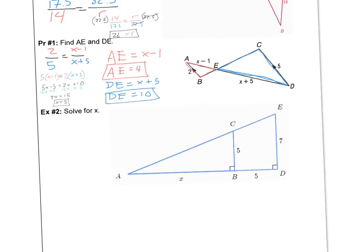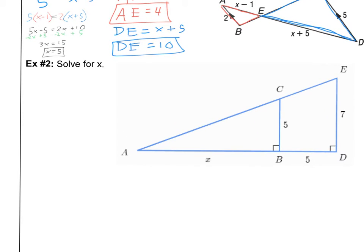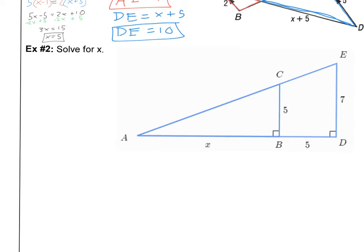Example 2: solve for X. This is one students make a lot of mistakes on. We still have similar triangles with proportional parts, so we set up a proportion. I'll trace the smaller triangle in red and the bigger triangle in blue. The common mistake is to think that the 5 is the only part of the bigger triangle's side that matters — but it's not. The bigger triangle's side is not just 5 or X; it's X plus 5, the total distance.